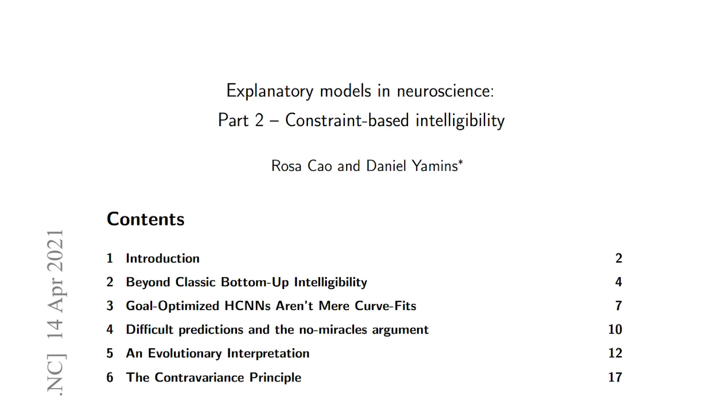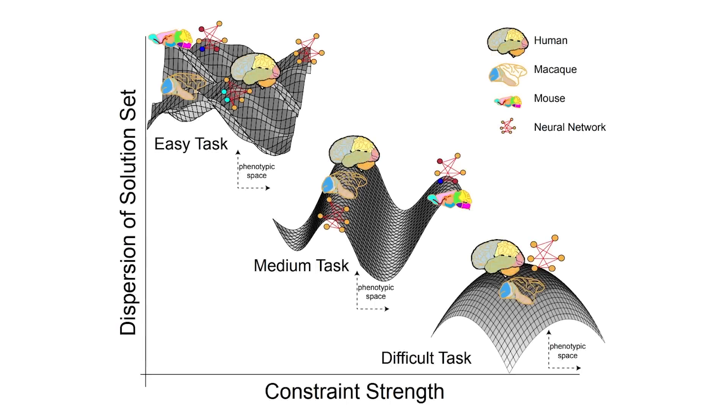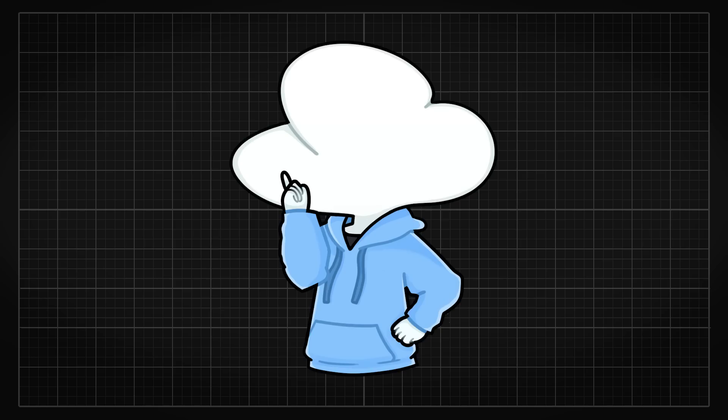This is similar to a concept proposed in a 2021 paper called the Contra Variance Principle, where it states that the more tasks we must solve, the fewer functions satisfy them all. So the second big question is, what representations are we converging to?